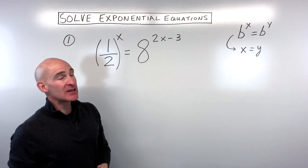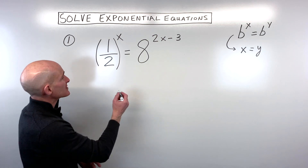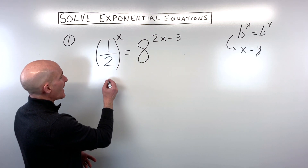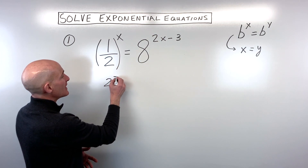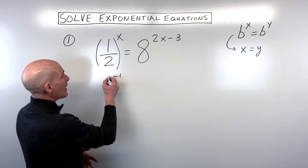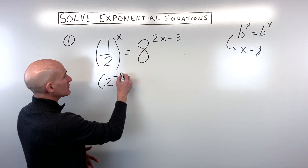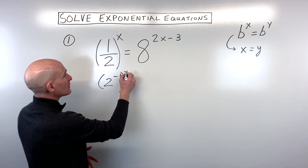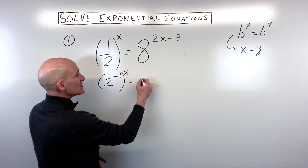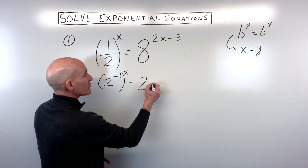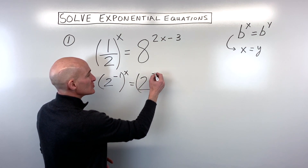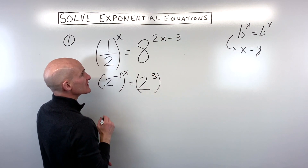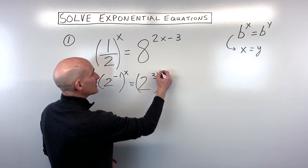I'm thinking two, because I can get one half to be two to the negative one power, and eight we can get to be two to the third power because two times two times two — three times — is eight.